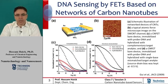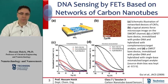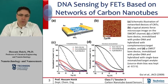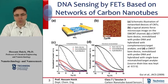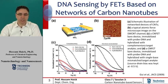In this slide, I present an example for DNA sensing using a field effect transistor based on a network of carbon nanotubes. Random networks of carbon nanotubes, mainly single-wall carbon nanotubes, with diameters ranging between 1 and 3 nanometers and length between 5 and 10 micrometers, are grown on silicon oxide wafers using chemical vapor deposition techniques.